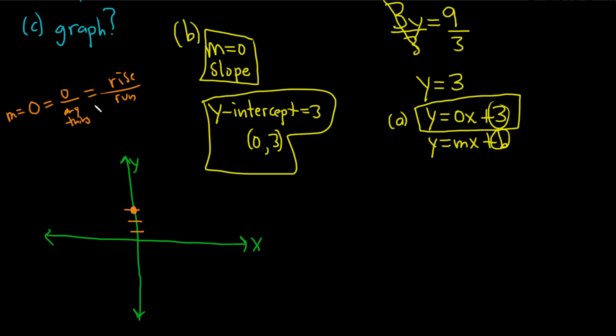So 0 over any number. So you rise 0, and you can run as much as you want. You run both ways as much as you want, and then you get your line.